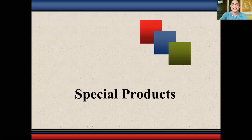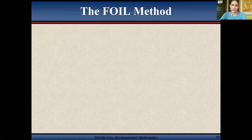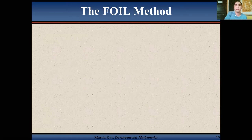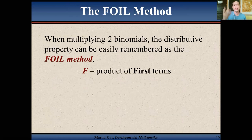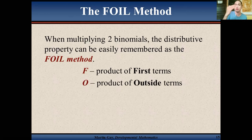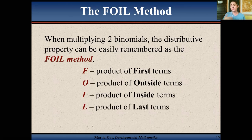Now let's proceed to special products. In multiplying polynomials, we can also consider the FOIL method. You can only use the FOIL method when multiplying a binomial by a binomial. F is the product of the first terms, O is the product of the outside terms, I is the product of the inside terms, and L is the product of the last terms.